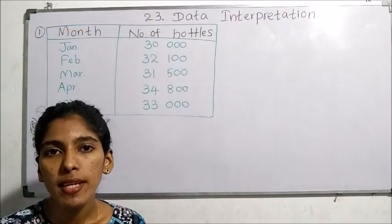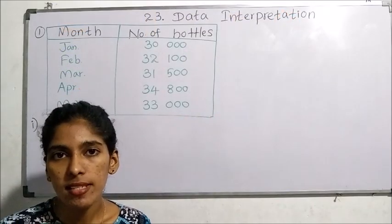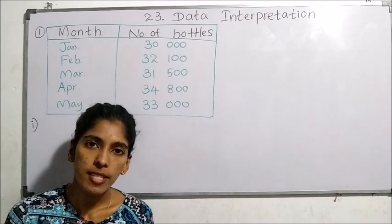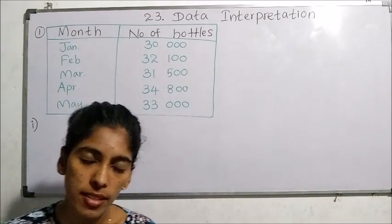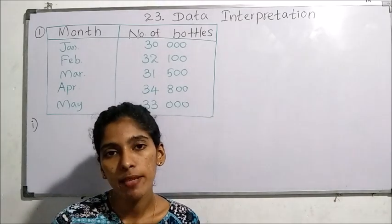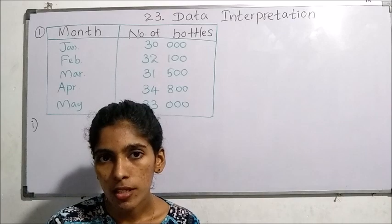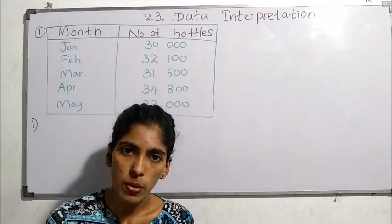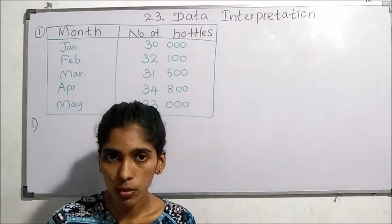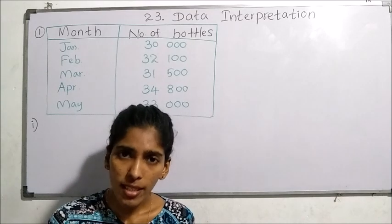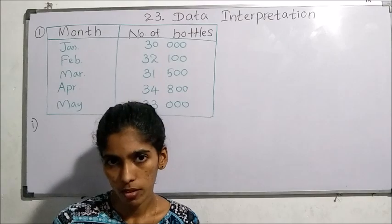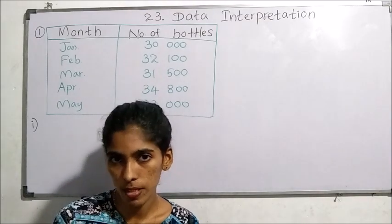Hello children, today our lesson is data interpretation. In an earlier lesson we learnt how to collect data, how to collect information with the help of tally marks, and thereafter we learnt how to represent them using a table or a picture graph. Now we are going to collect information with the help of these picture graphs or tables.